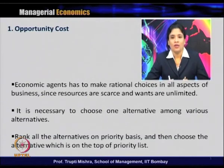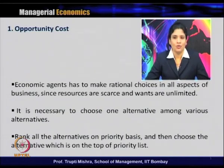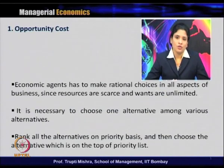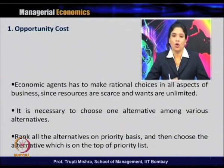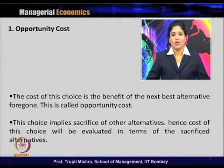Since they have to make choices among alternatives, it is necessary to choose one alternative among various alternatives. How do they do this? They rank all the alternatives on a priority basis, then choose the alternative which is on the top of the priority list. Resources are scarce and wants are unlimited, so they can choose only one alternative among various alternatives.